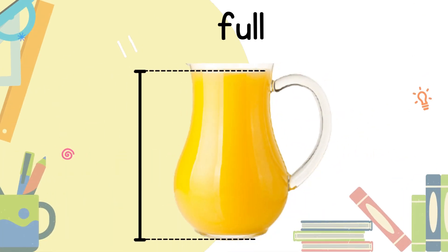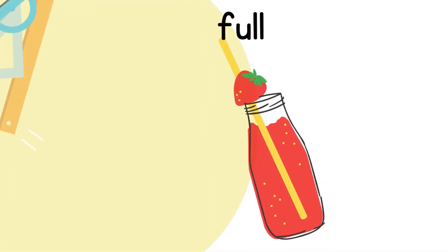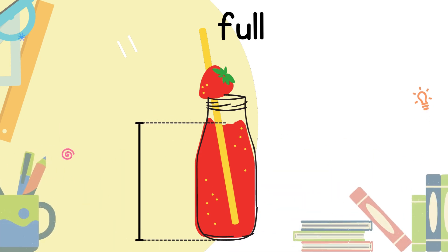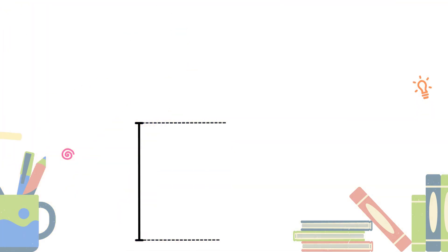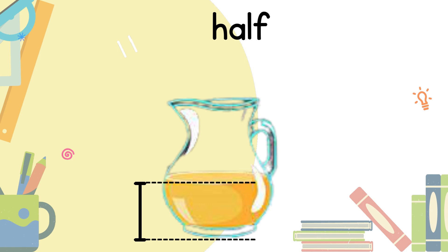Now, let's continue learning more about volume of liquids. Look at this one. We have a jug with juice. The juice in the jug is full — the jug is full. Say with me: full. Good job. Now, look at this unique glass. We have the strawberry juice in this glass. The juice in this glass is full. Say with me: full. Well done. Now, we have a jug with juice, but the juice in the jug is only half. Say with me: half.